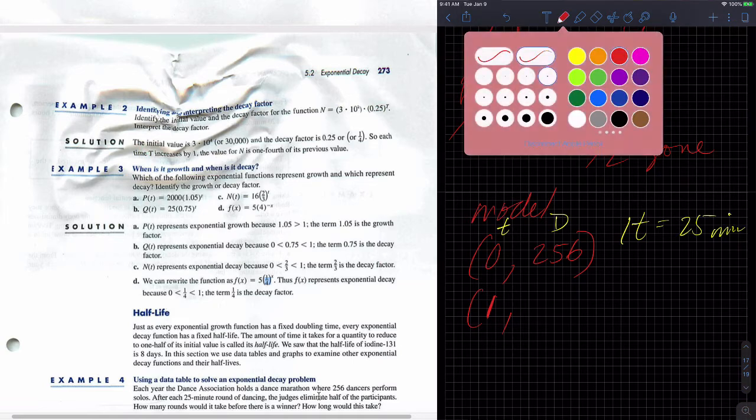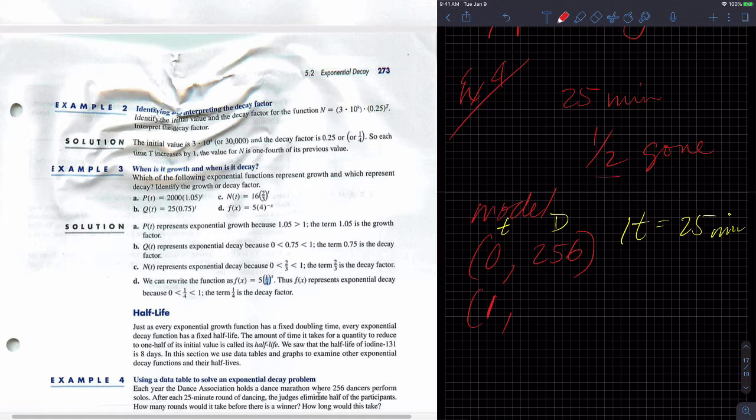So then, building up my table, one, I would have half of the dancers gone after 25 minutes. So now I have 128. I should know those numbers. Doofy me, sorry. So 1, 128.